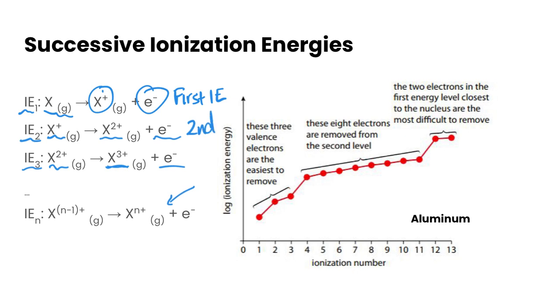As you take more and more electrons away from an element, it gets harder and harder to do so because that element is becoming increasingly positive. The positive charge is increasing, making it hold on to those electrons much more tightly.